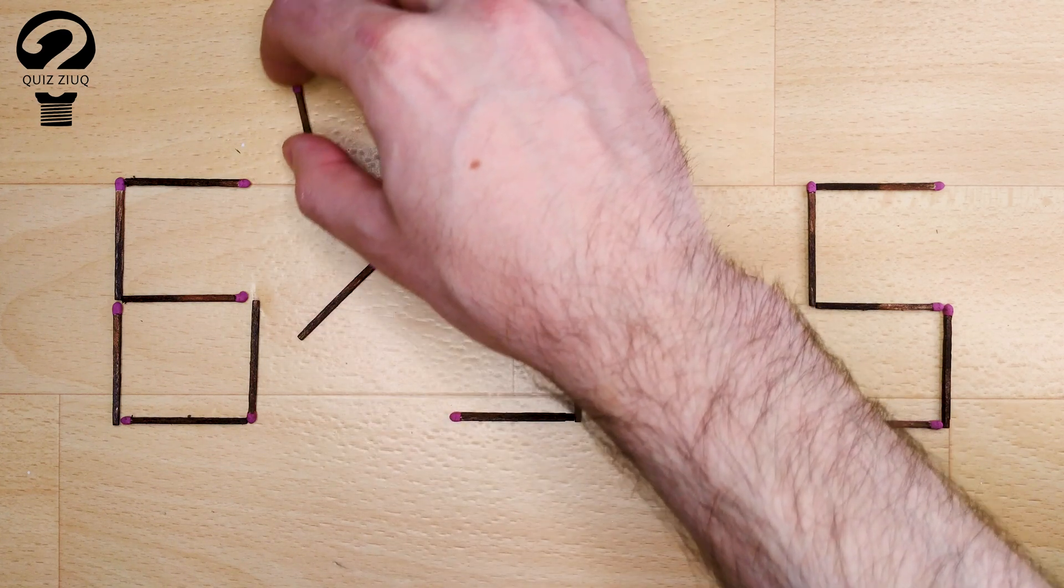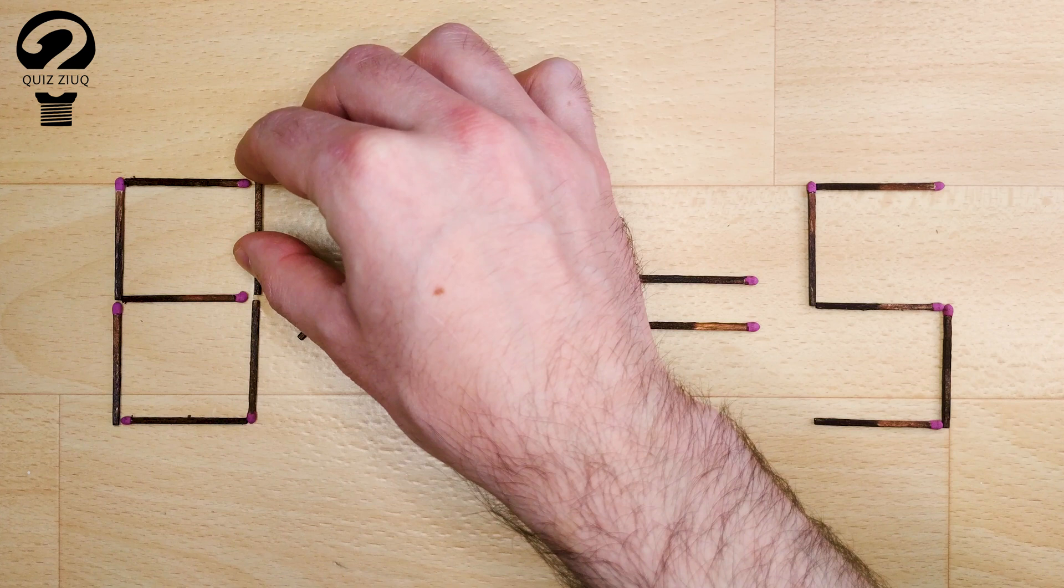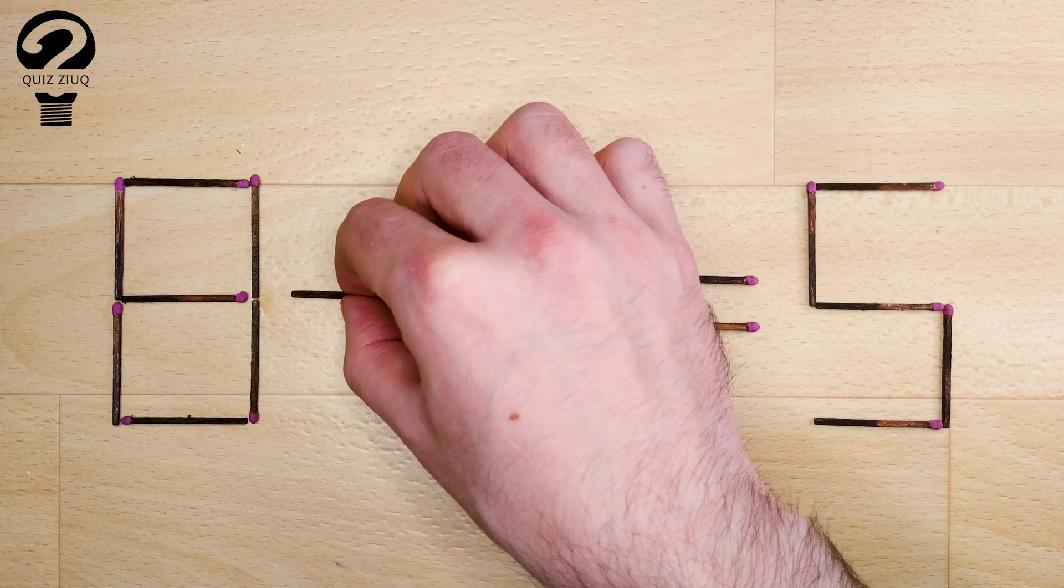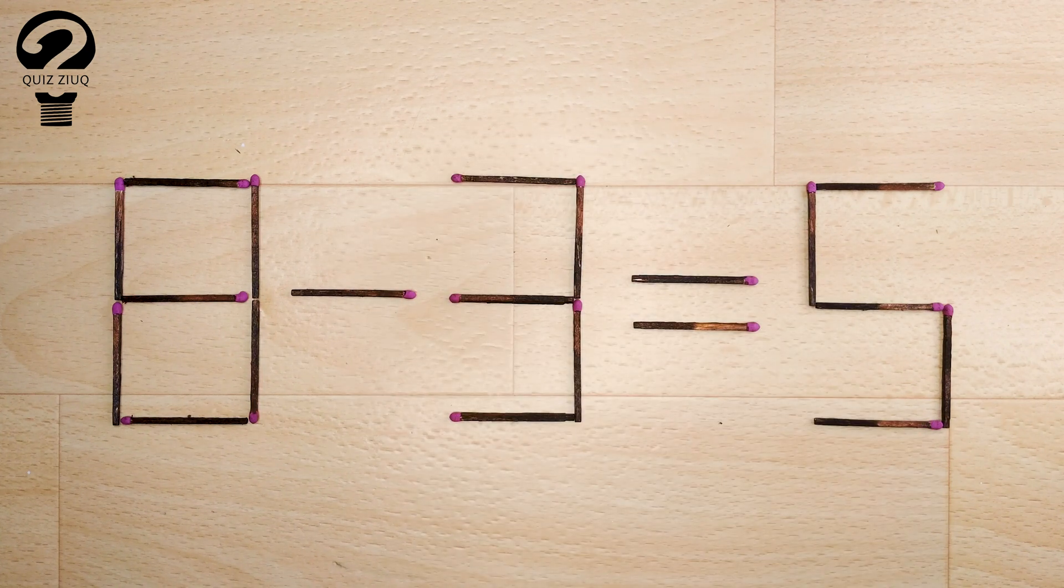8 minus 3 equals 5. 5 equals 5. Our equation is correct. The task is completed. The puzzle is solved.